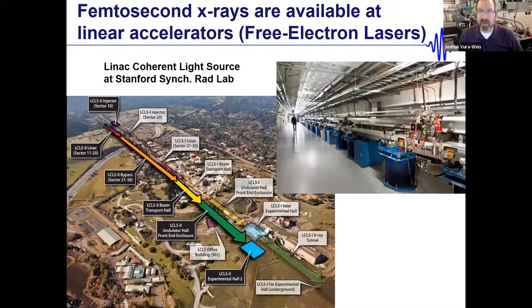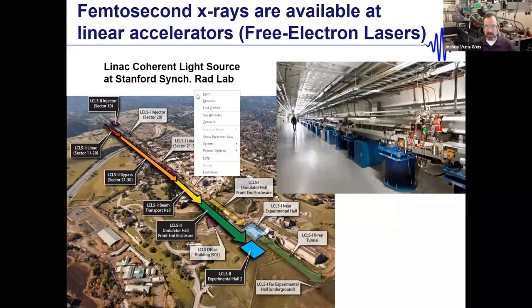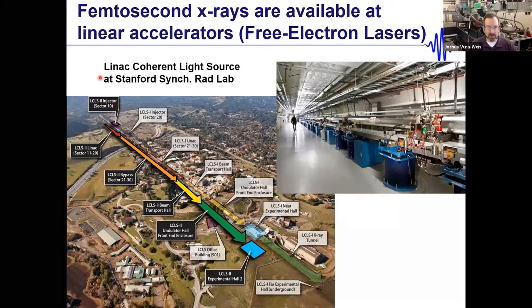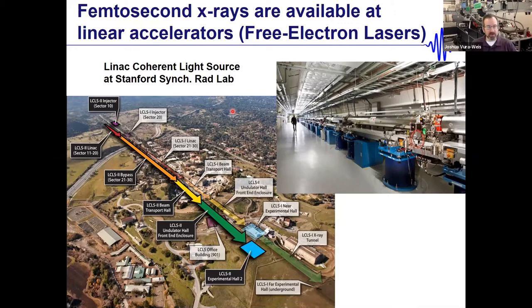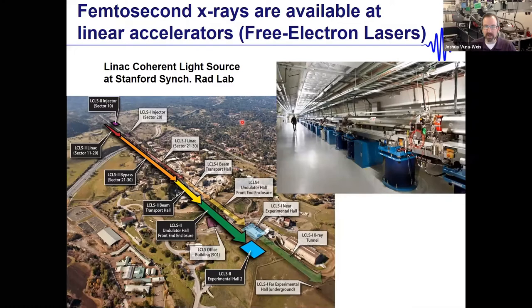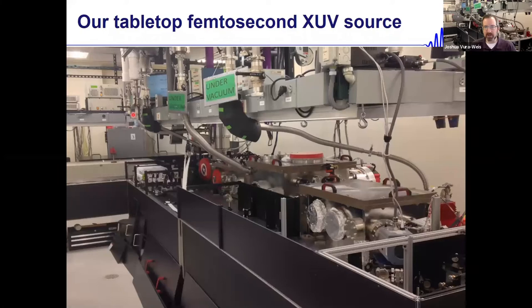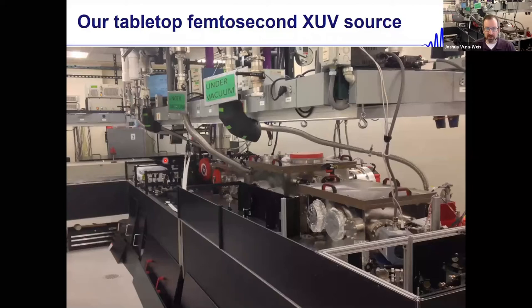If you want to do femtosecond spectroscopy at these energy ranges, there are fantastic linear accelerators called free electron lasers that give femtosecond — even attosecond — time resolution. The closest one to me is the Linac Coherent Light Source. But I'm also lazy and don't like to travel, so we built a tabletop femtosecond extreme ultraviolet source that fits on basically a 22-foot laser table plus a set of ultra-high-vacuum chambers.